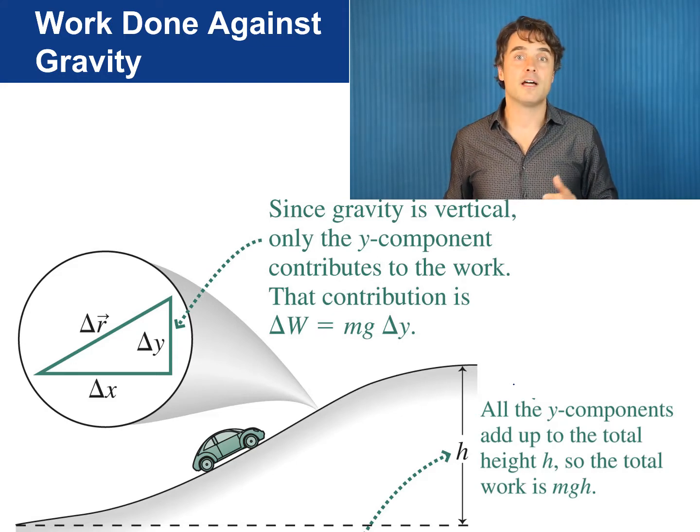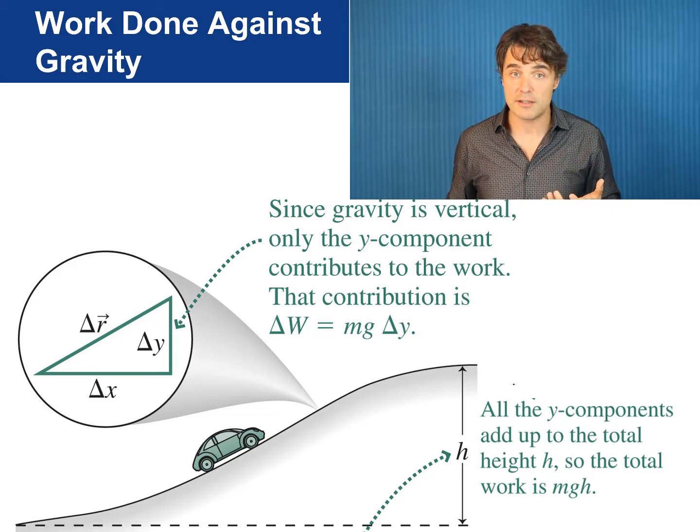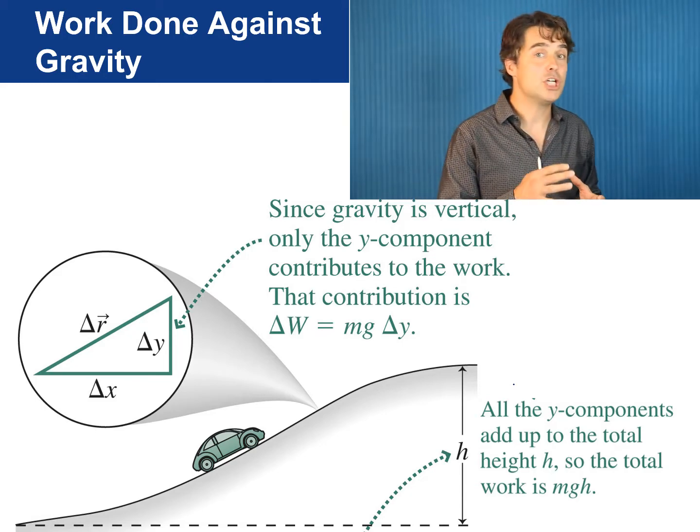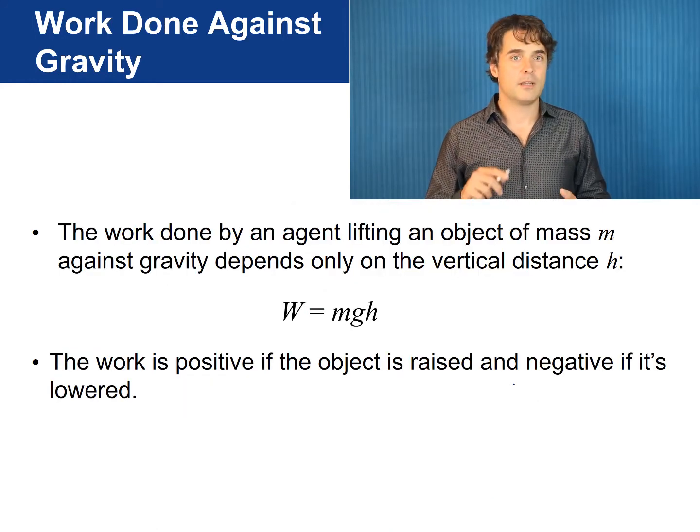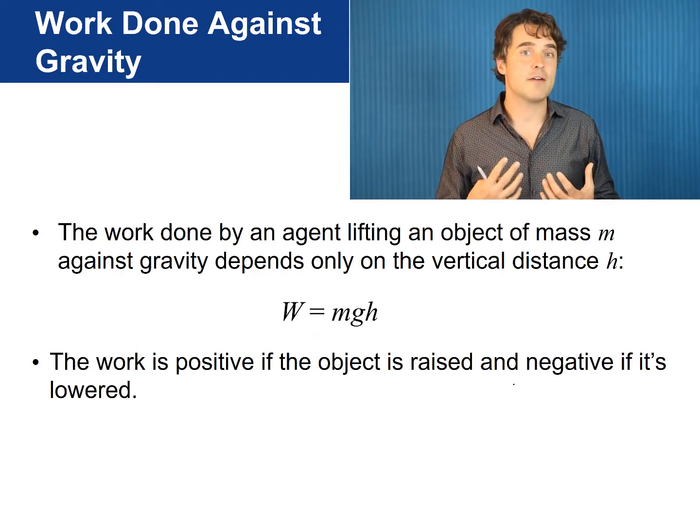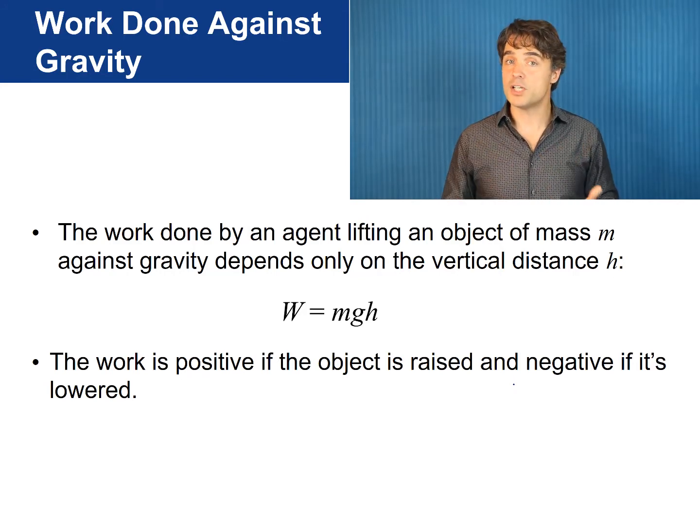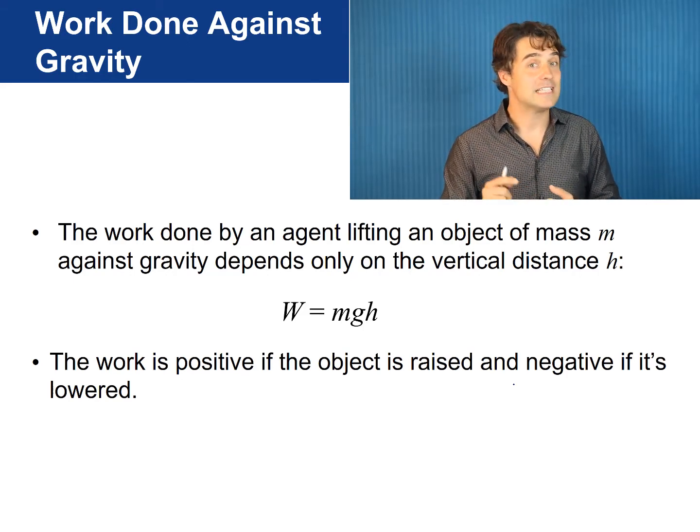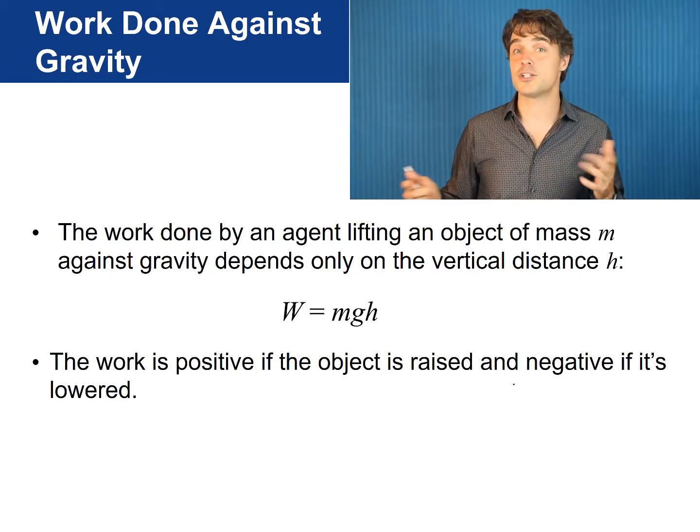And if you define the y displacement to be the height of the hill, h, then the work done by the road on the car against gravity is mg times h, or mgh. Again, the work done by an agent lifting an object of mass m against gravity is m times g times h. The work is positive if the object is raised and negative if it's lowered. Keep this in mind because in the next chapter this equation will come up again when we define gravitational potential energy.